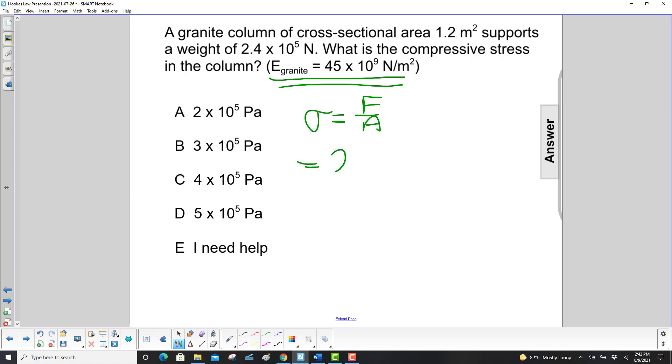The force is the weight, 2.4 times 10 to the 5th newtons. The cross-sectional area is 2, nope, it's 1.2, 1.2 square meters.